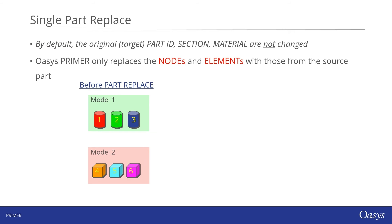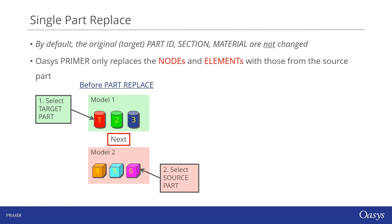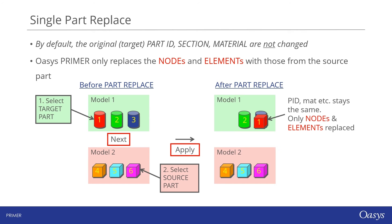By default, the part replace tool leaves the target part ID, section and material unchanged, and only the nodes and elements are modified. We can visualise this with a simple example: the target model comprises three cylinders with part IDs one, two and three, while the source model is made up of three cubes with part IDs four, five and six. If we want to remove part one from model one and replace it with part six from model two, after clicking Apply, the geometry of part one is updated and its position now matches that of part six. Model two is left unchanged throughout the operation.